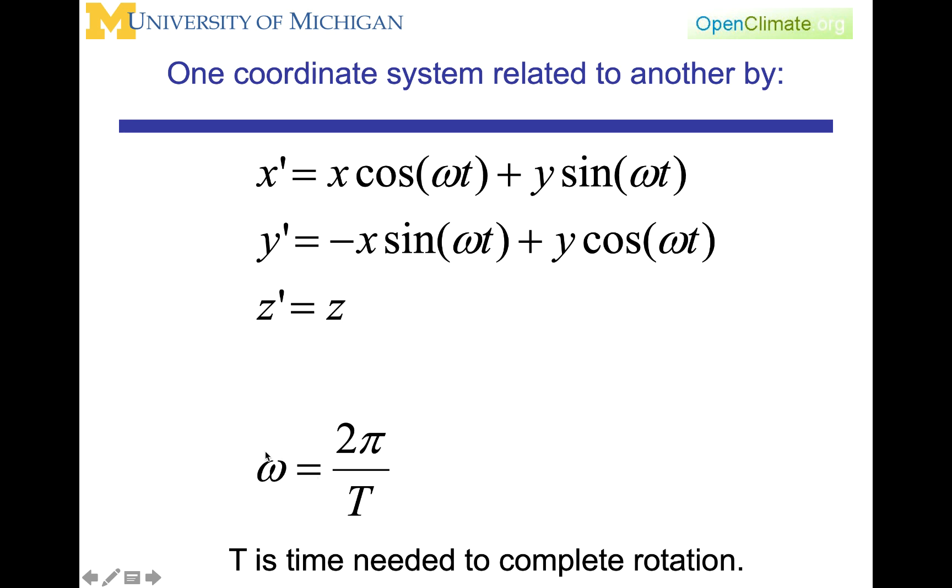Omega, the angular velocity again, is 2π, the number of radians in a complete rotation, over T, this large T, which would be the period, the time needed to complete the rotation.